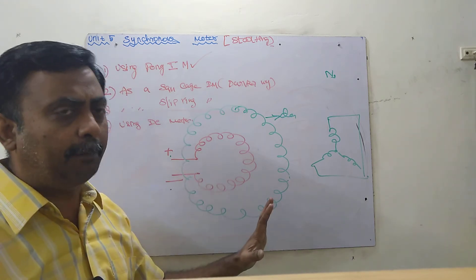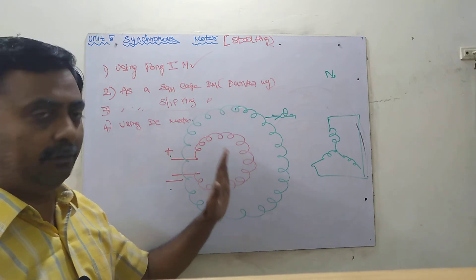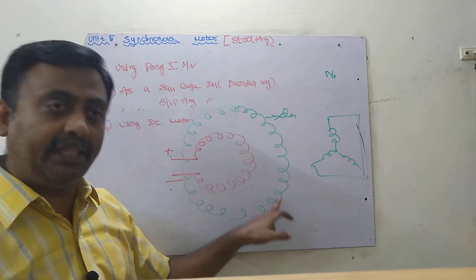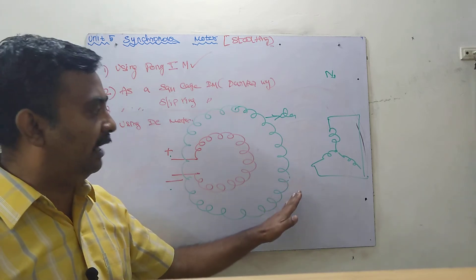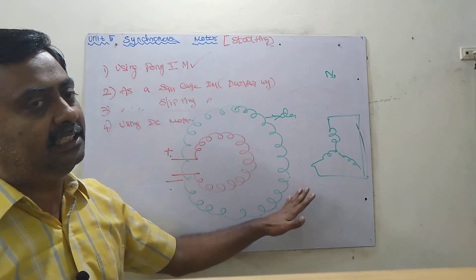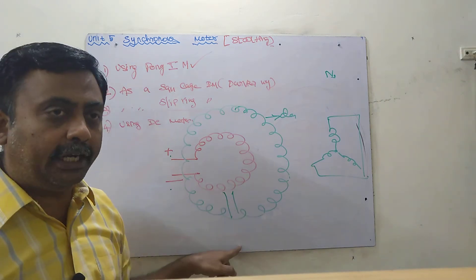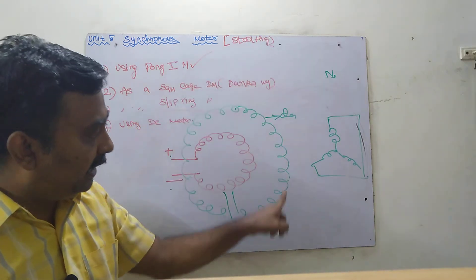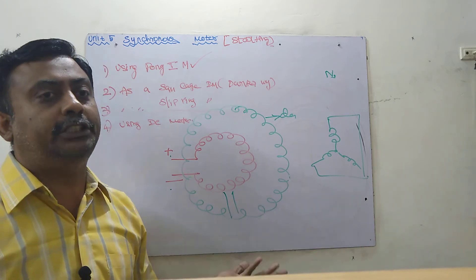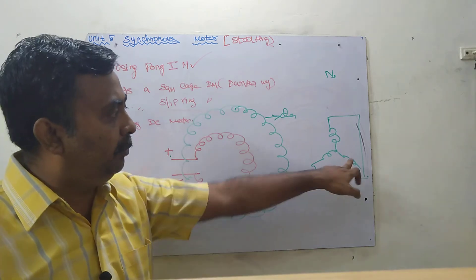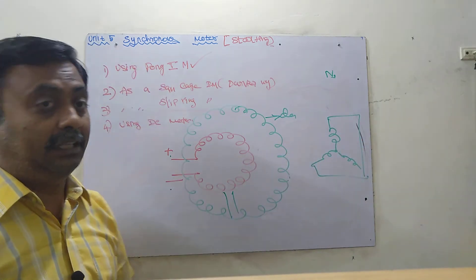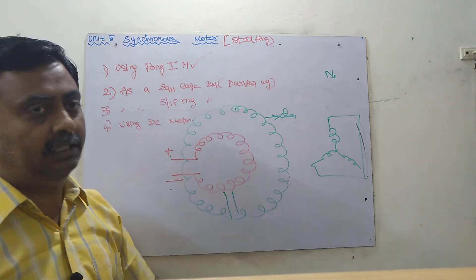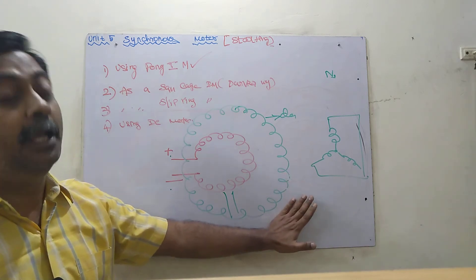Once magnetic locking occurs, the damper winding continues to exist on the rotor. However, since both the damper winding and the rotating magnetic field are now rotating at synchronous speed, there is no change in flux through the damper winding. Therefore, no EMF is induced, no current flows, and no losses occur in the damper winding — unlike in an induction motor where there are always losses.